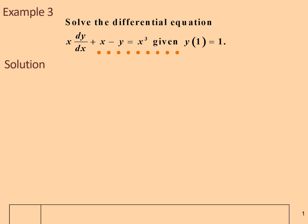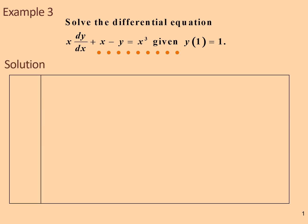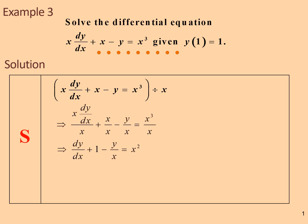The solution begins by simplifying the equation, dividing through by x. We get dy/dx - y/x = x² - 1, which is the new equation.